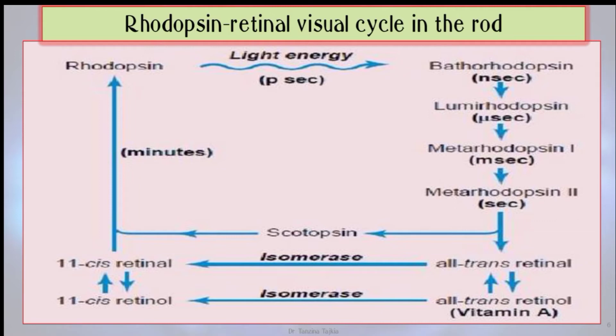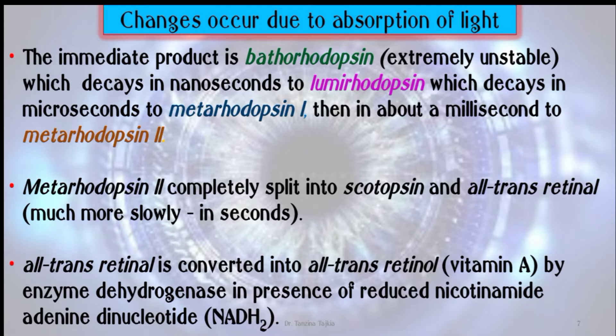This is the figure of the rhodopsin retinal visual cycle, taken from Guyton. The immediate product is bathorhodopsin, which is extremely unstable and decays in nanoseconds to lumirhodopsin, which decays in microseconds to metarhodopsin I, then about a millisecond later to metarhodopsin II. Metarhodopsin II completely splits into scotopsin and all-trans retinal.